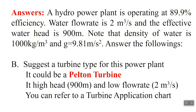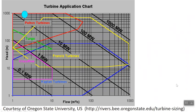Part B: suggest a turbine type for this power plant. It is a high head of 900 meters and a low flow rate of 2 cubic meters per second, so your selection would be a Pelton wheel type turbine. You can go to one of the available websites to find a turbine application chart. On the x-axis you have flow rate in cubic meters per second, and on the y-axis the head. You locate these two parameters and in our case it would be a Pelton turbine.